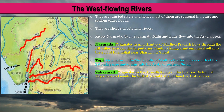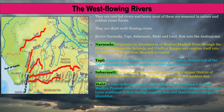The River Mahi rises in the Western Vindhya range, flows northwards through Madhya Pradesh, turns northwest into Rajasthan, then turns southwest to flow through Gujarat state and empties into the Gulf of Khambat.